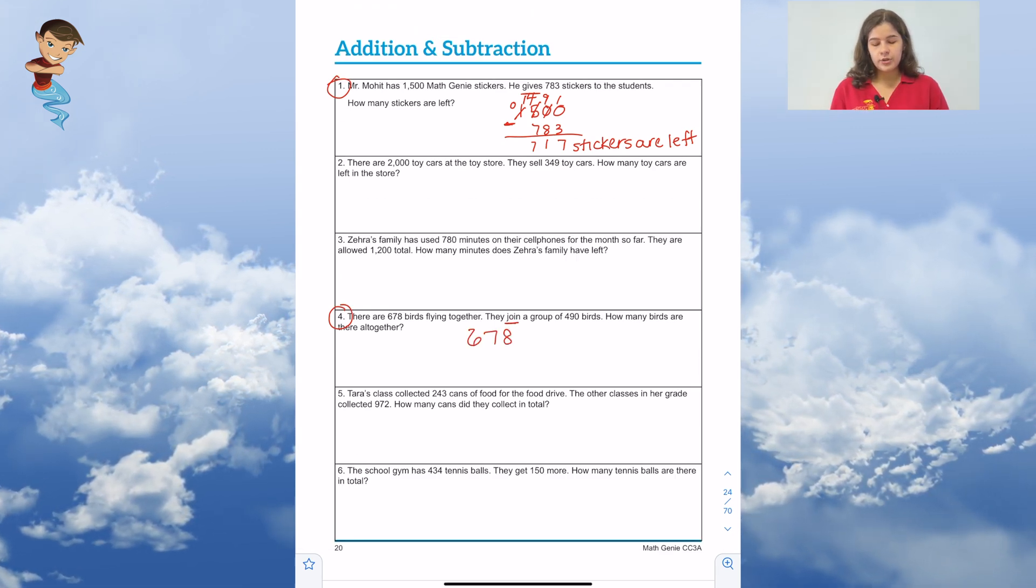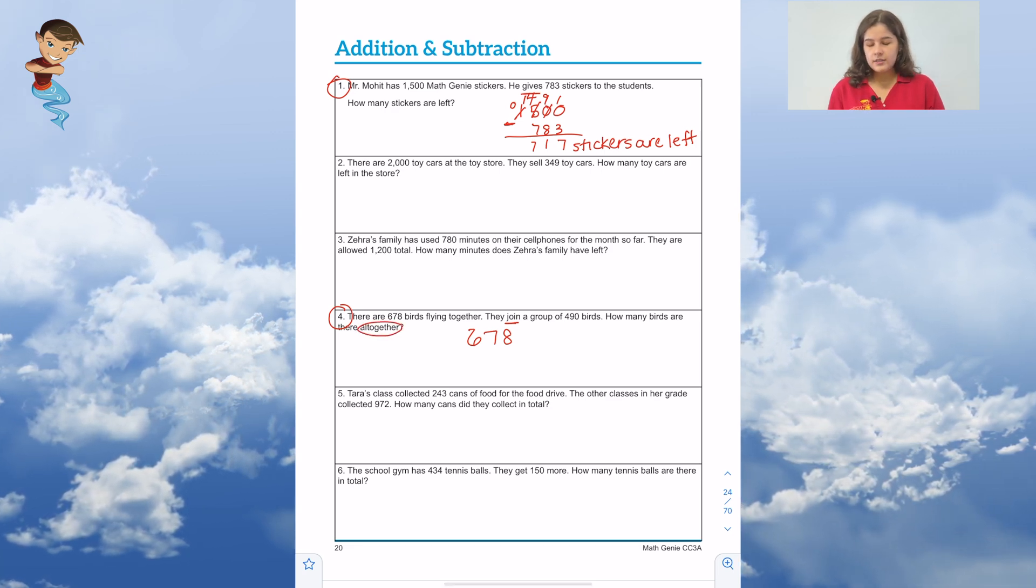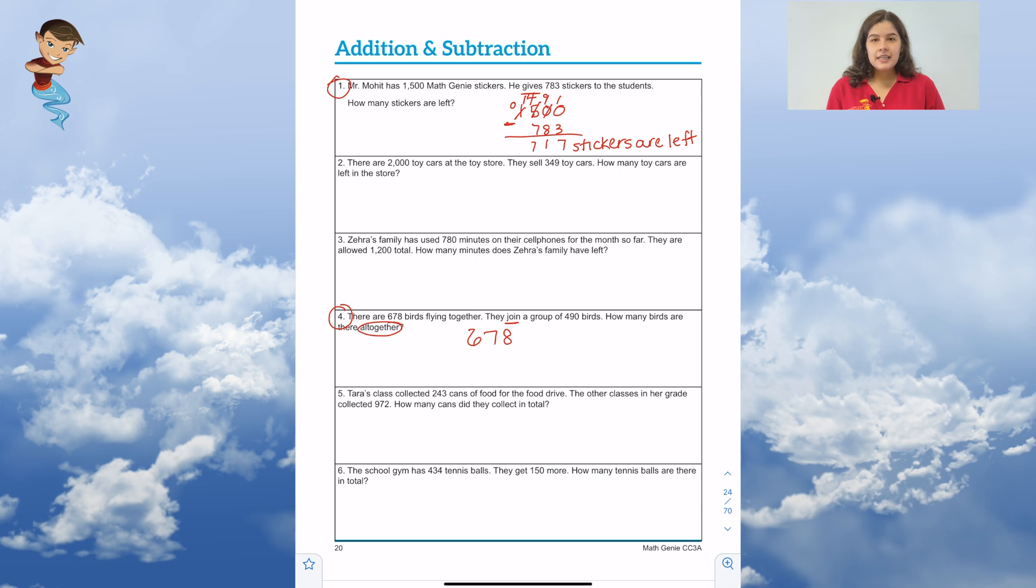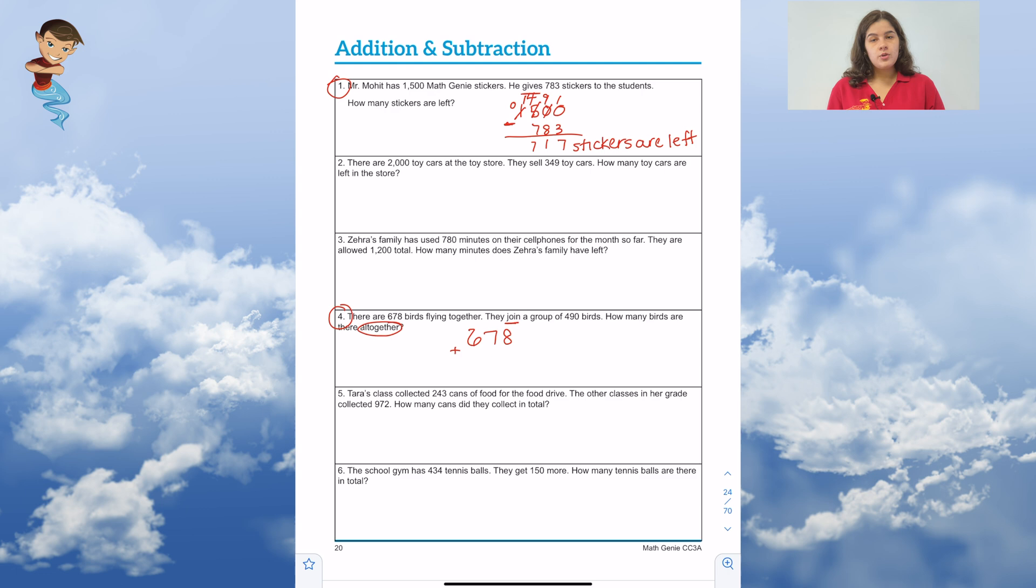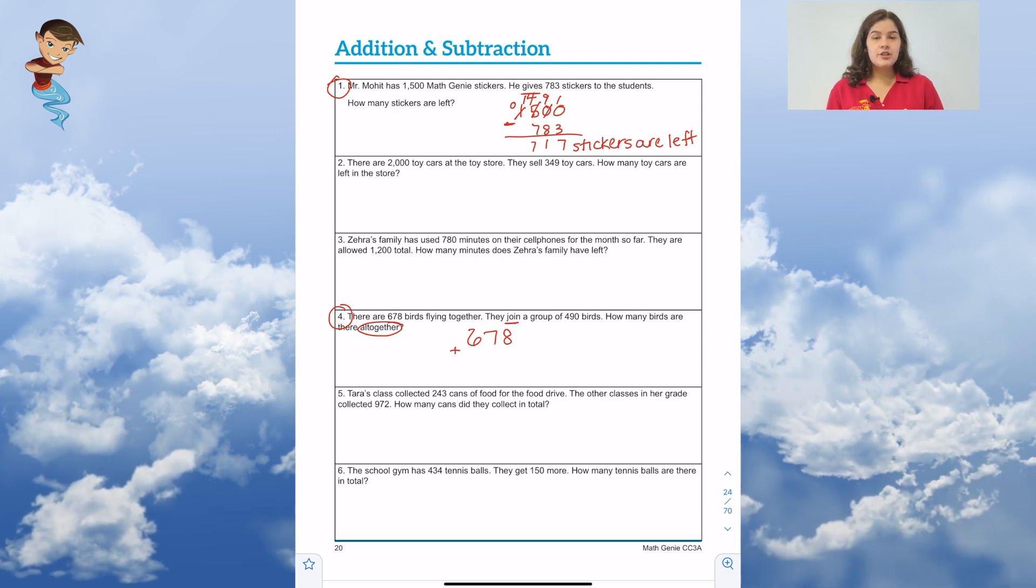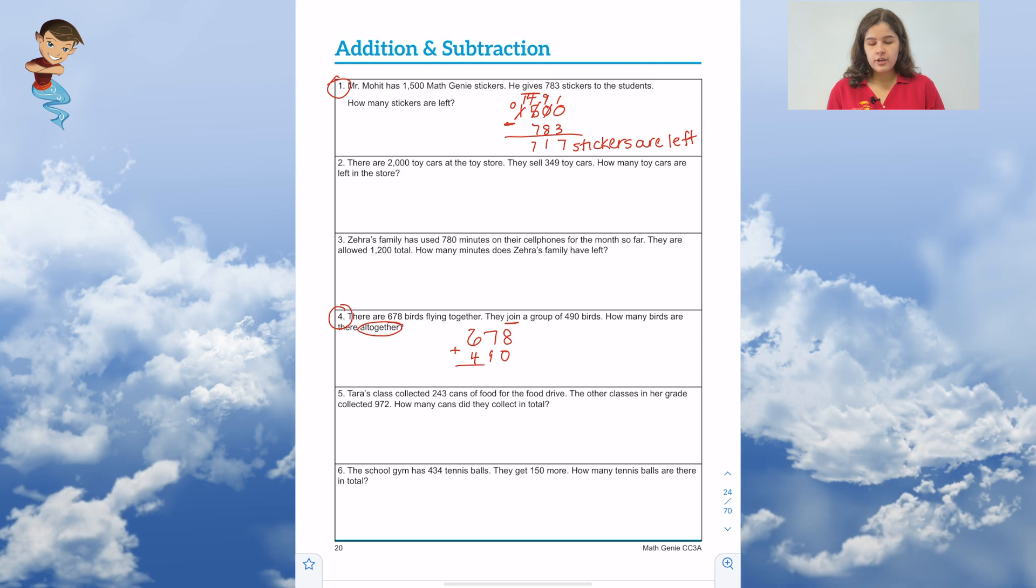So that is our starting point. They join a group of 490 birds. How many birds are there all together? The best keyword there is all together. That tells us we need to add. So we have our original group that has 678 birds plus the group they join, which is 490.